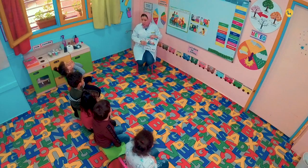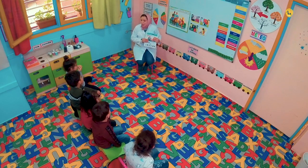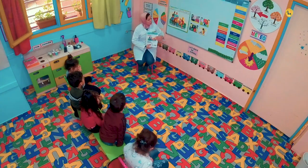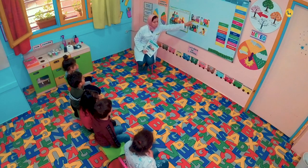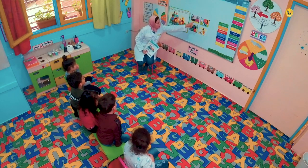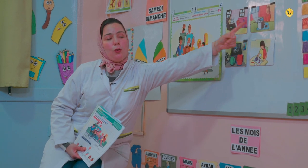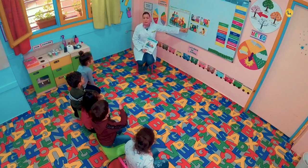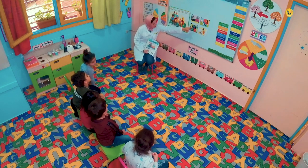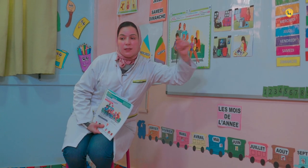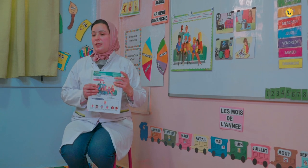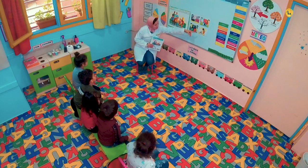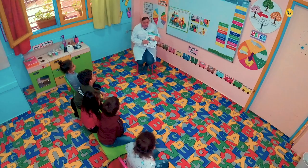Écoutez, je répète. Lina aime sa famille. Chaque soir, la famille se réunit dans le salon. Papa lit le journal. Maman prépare le repas. Farid regarde. Lina dessine — un tableau. Très bien.